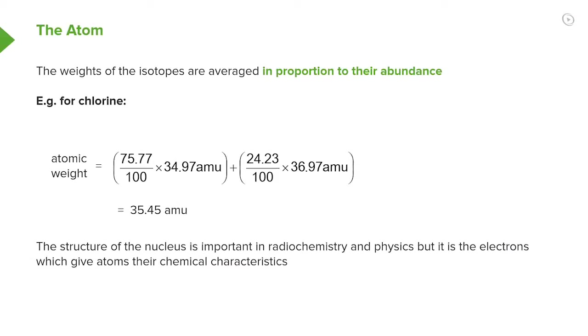Right, so here we have an example of how you would calculate the relative atomic mass of chlorine. And here, as you can see, they are proportional to their abundance. Now, recall what I said.